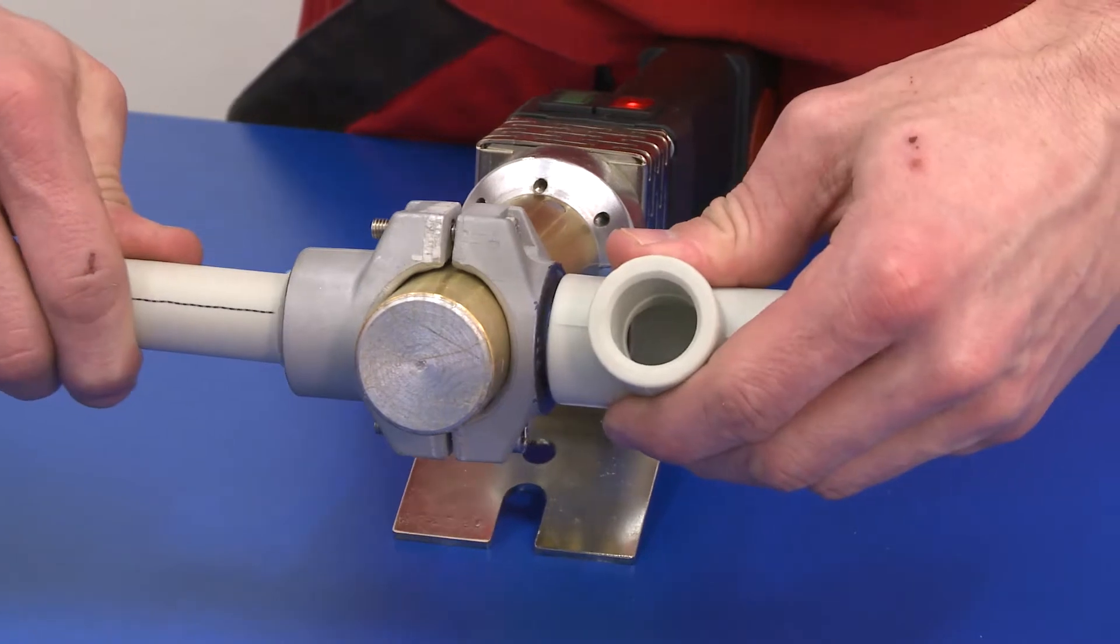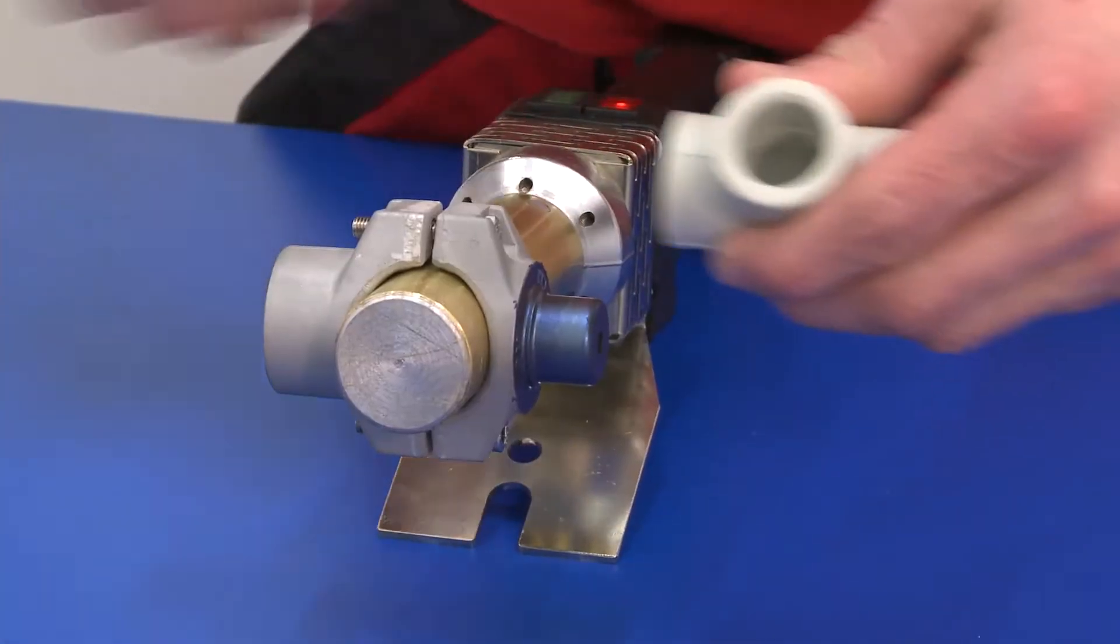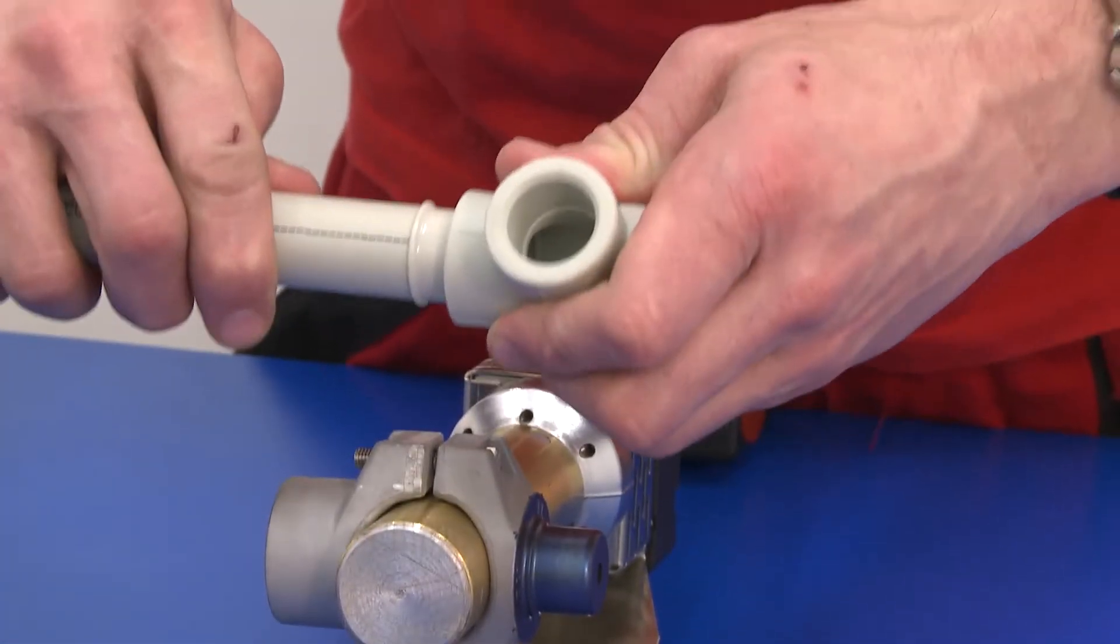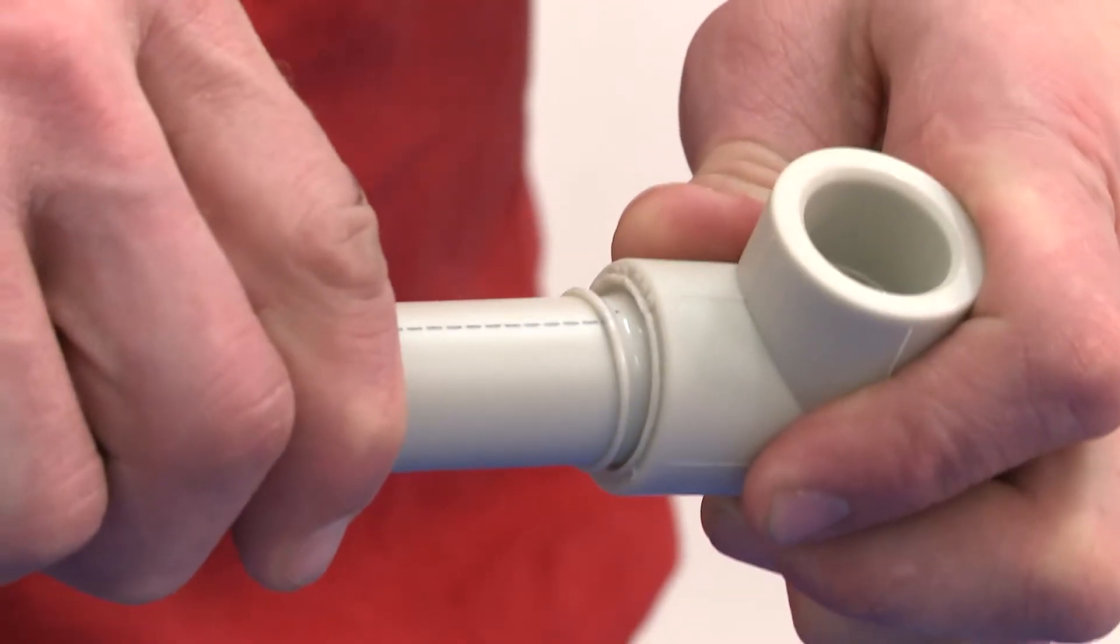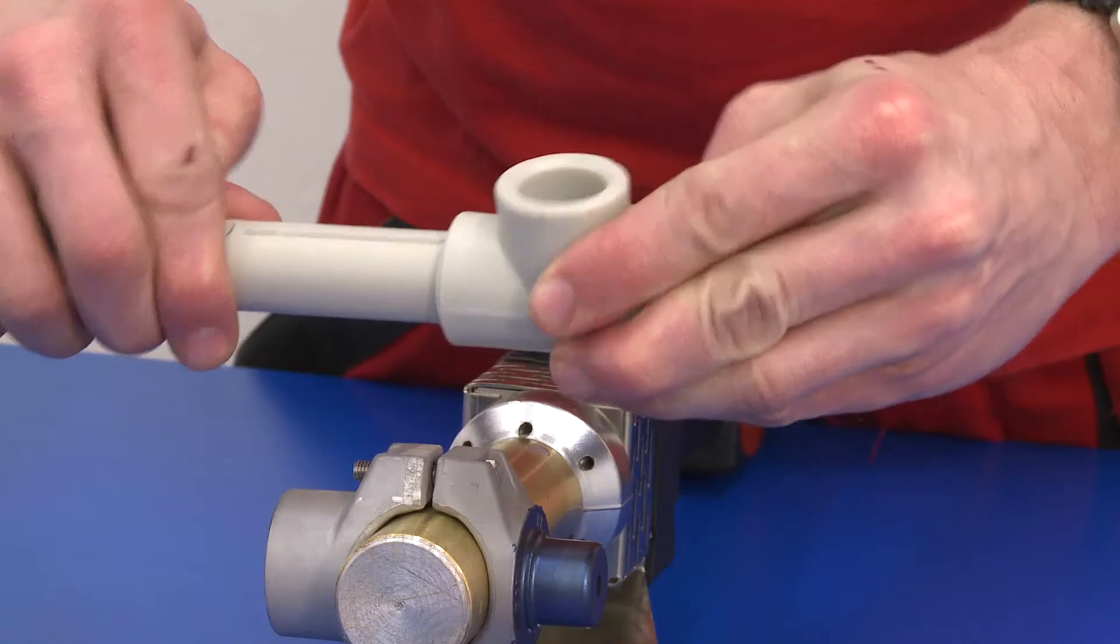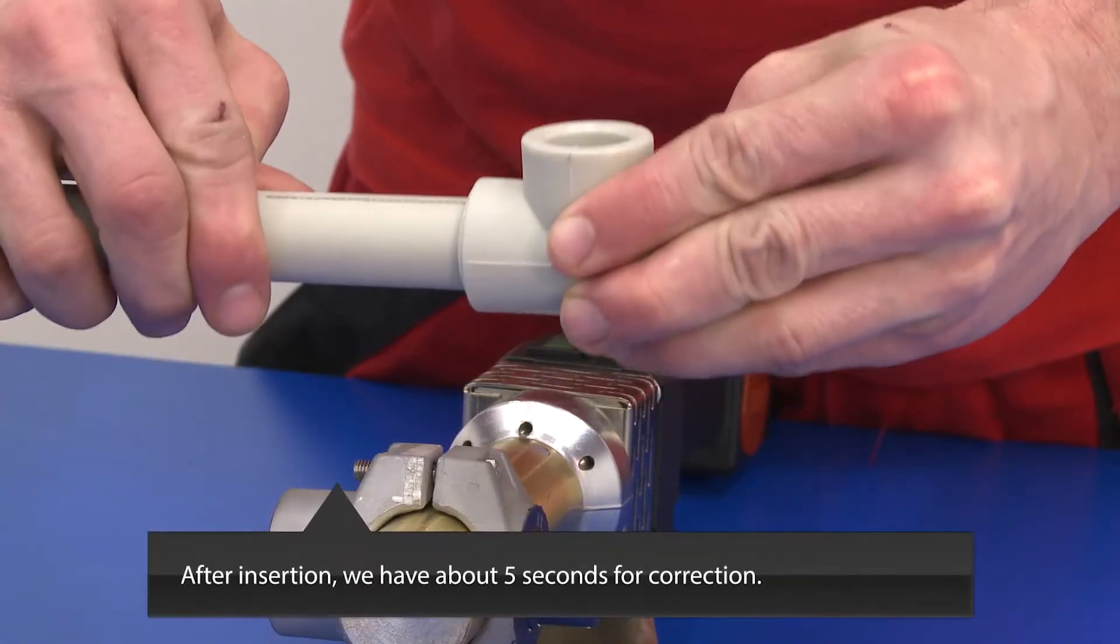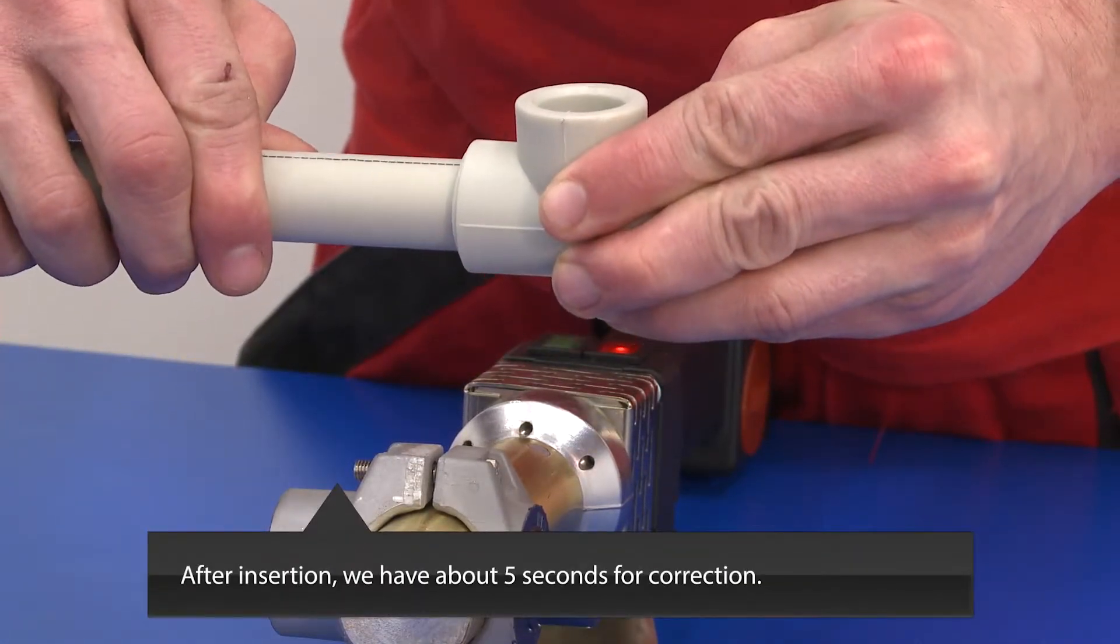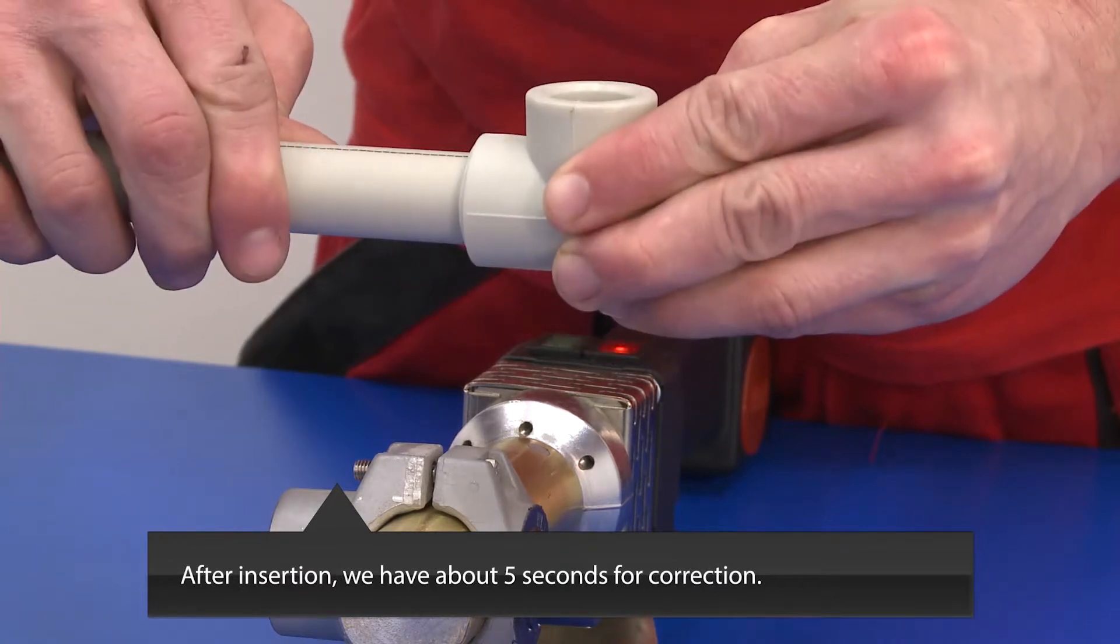After the warm-up time the pipe and fitting are removed from the attachment. The connection is performed by pushing the tube by slow steady pressure axially into the socket of the fitting without rotating. Now we have approximately five seconds for possible correction.